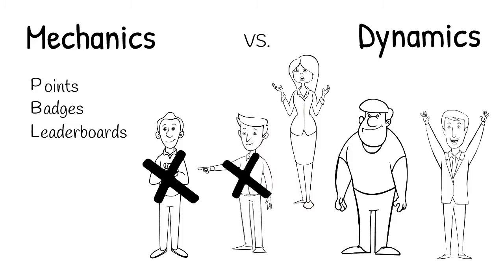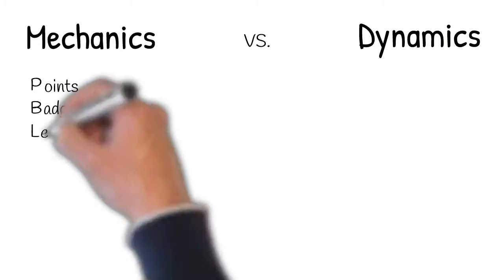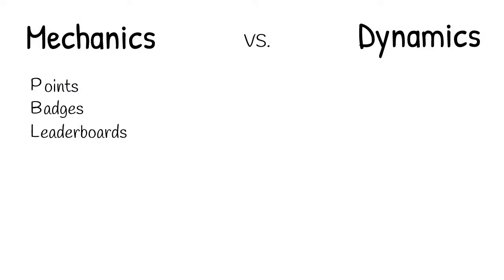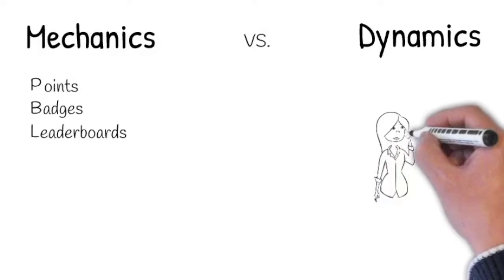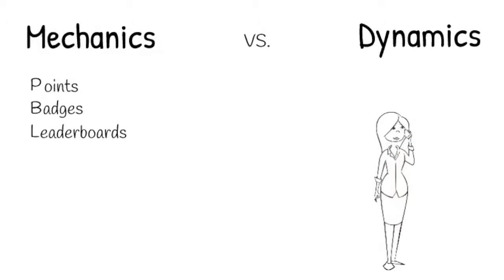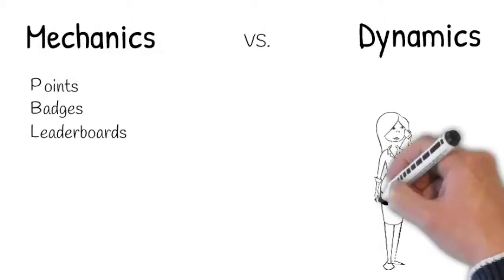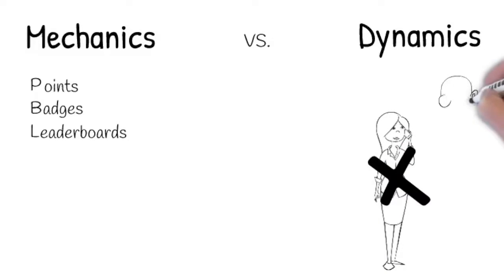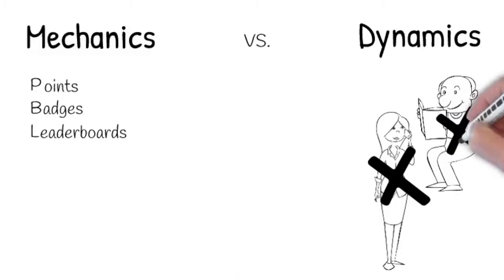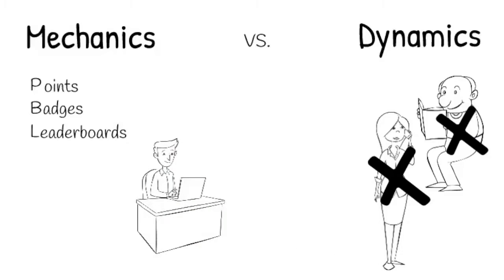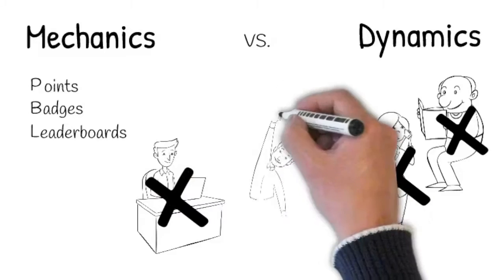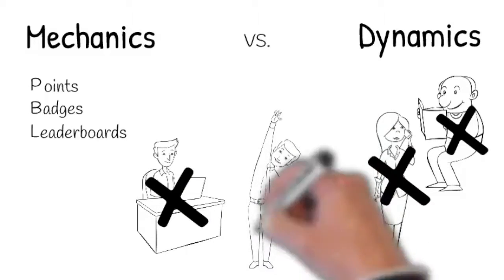Now what's important here when we're looking at points, badges, and leaderboards is also to realize that these three mechanics have very little effect on other types of motivators. For instance, beauty, unless the badge is extremely attractive. Curiosity, there's nothing here to really appeal to the curious folks. Idealism, order, unless the points are given out in a very orderly manner, but they probably don't really appeal to people who are high order or low order for that matter. Physical activity, there's very little interest for them. And of course, social contact, these don't really apply to them.